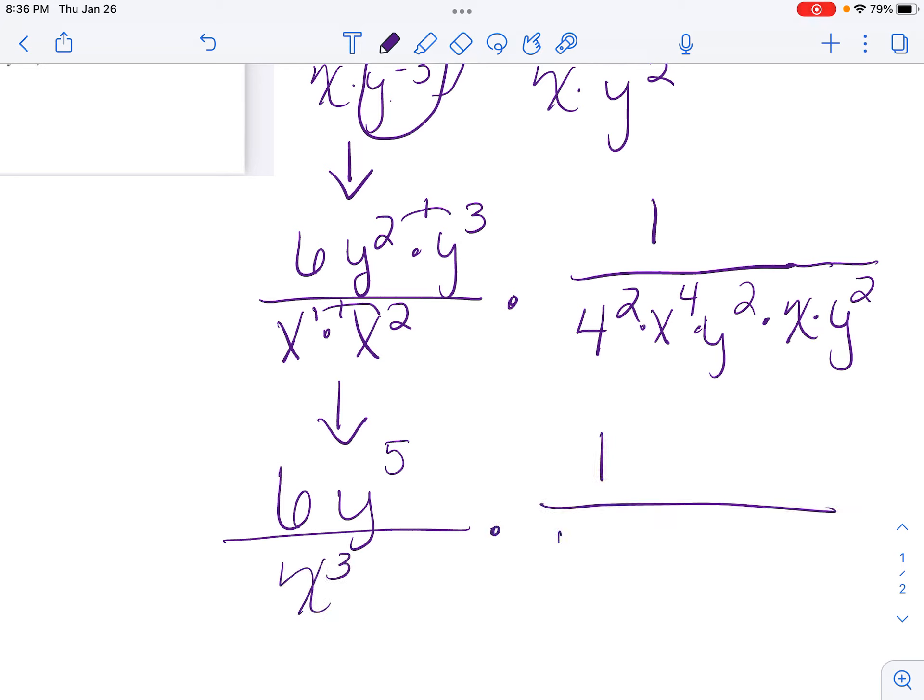Keep my 1 on top. 4 squared is 16. Then I have x to the 4th times x to the 1, so that's x to the 5th. Then I have y squared times y squared is y to the 4th.